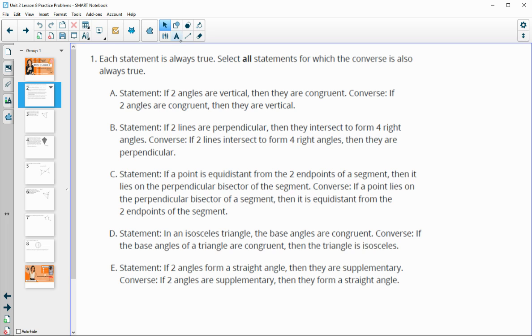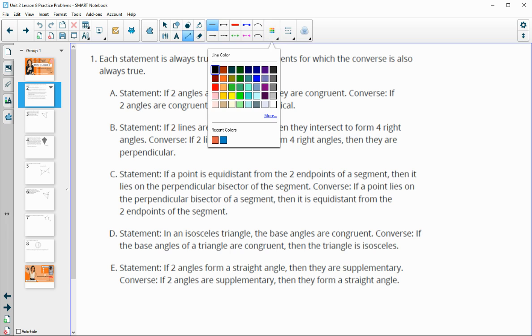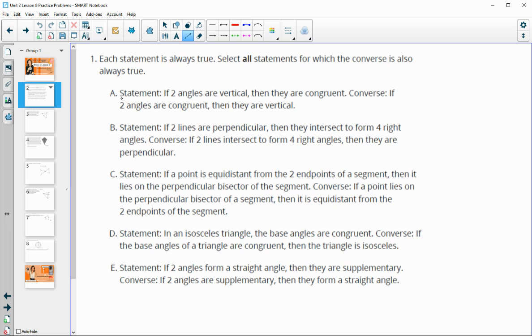Number one says that each of the statements is always true. Determine whether the converse is true. So they're giving you a statement in each one. This is true. We're just reading the converse, which is where we switch the end and the beginning and decide if the converse of the statement is also true.